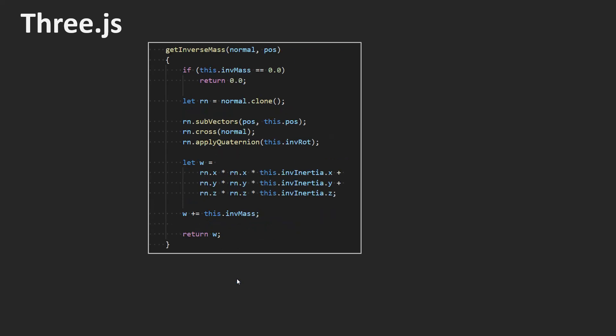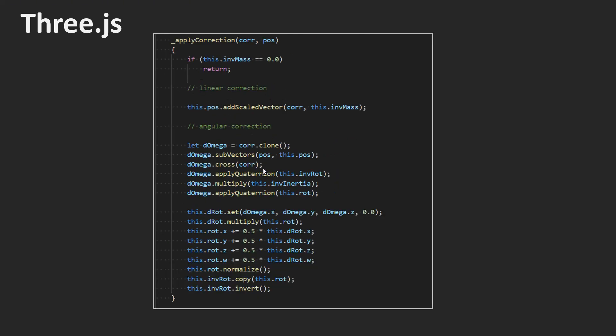The method to compute the generalized inverse mass of a body is a direct implementation of the equation I gave in the slides. Here you see how a correction is applied to a body. This is the position update and here you see the orientation update.